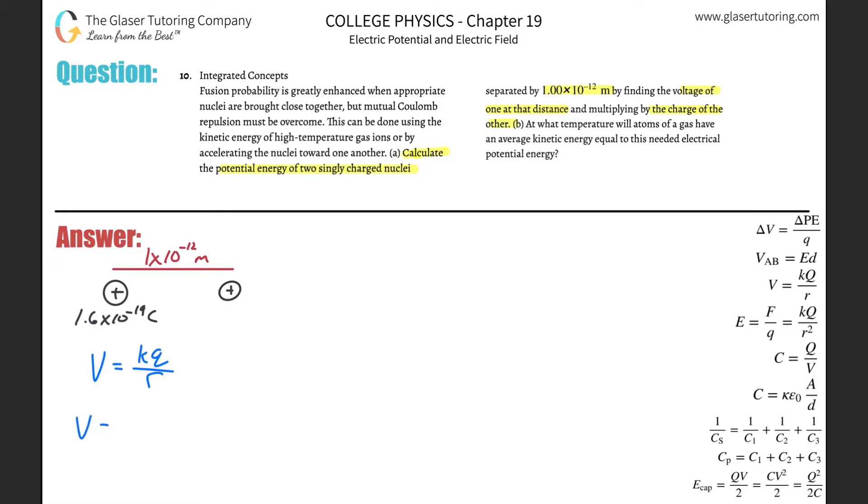So what I can now do is calculate the voltage at this particular point. The voltage at this point produced by this charge is going to be equal to the electrostatic constant K, which is 9×10⁹, times that charge value of 1.6×10⁻¹⁹ Coulombs, all divided by the distance 1×10⁻¹². Notice we can throw this into the calculator. So we take 9×10⁹, multiply it by 1.6×10⁻¹⁹, and divide by 1×10⁻¹². We get a value here of about 1440 volts.